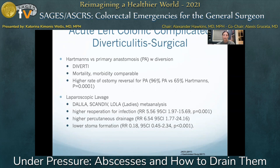Non-resectional strategies like laparoscopic lavage have been considered over the past decade with the aim of organ preservation. This approach is reserved for patients with Hinchey class 3 diverticulitis, where purulent peritonitis is aggressively suctioned and the peritoneum is treated with lavage. This approach has steadily fallen out of favor, as meta-analysis of three large multicenter trials recognized a higher risk of reoperation and recurrence of abscess requiring percutaneous drainage.